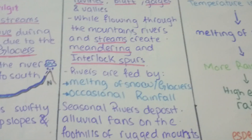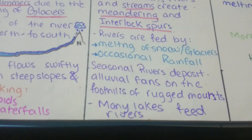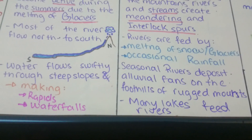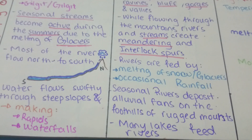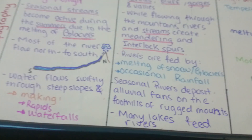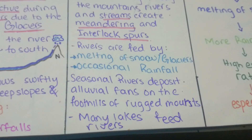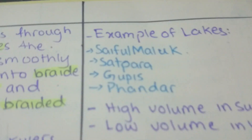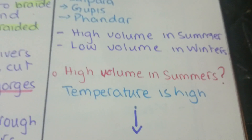Alluvial fans are fresh alluvial sand that is very nutritious for farming. Many lakes feed rivers; examples include Saiful Maluk, Satpara, Goopis, and Pandar. Rivers have high volume in summers and low volume in winters.